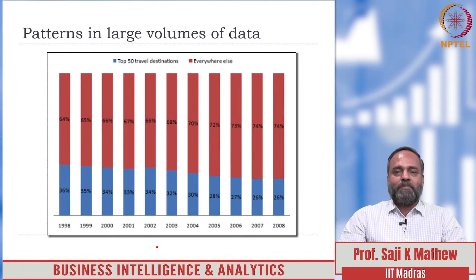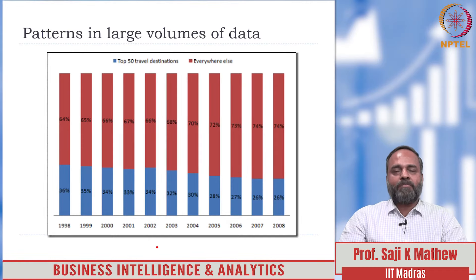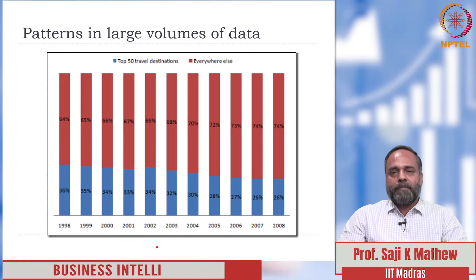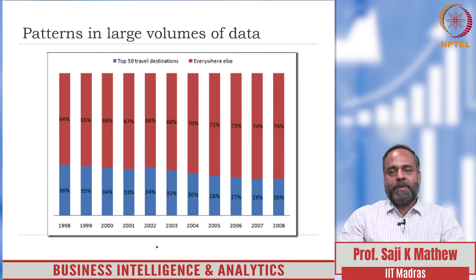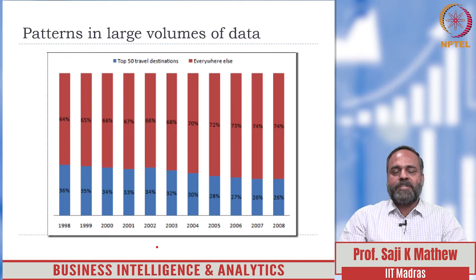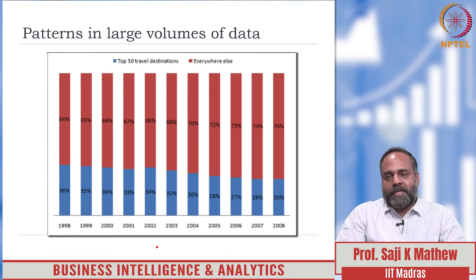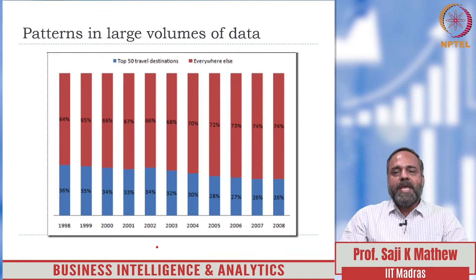There is a problem here. What is displayed in this graph is information. The raw data should have been in databases — databases of travel agents, databases of airline companies — who have data about how many people are traveling from where to where. Someone obtained this data, analyzed it, and visualized it. What is shown in the graph, strictly speaking, is information about relative air travel volumes from 1998 to 2008.